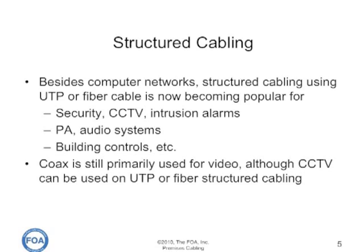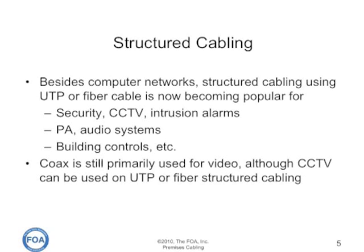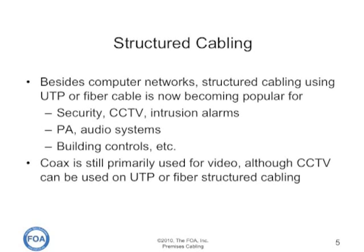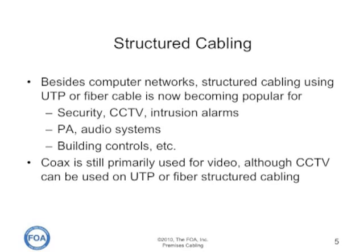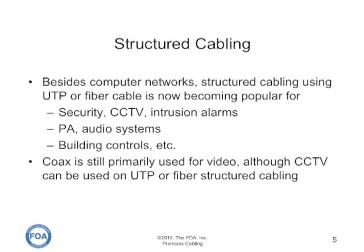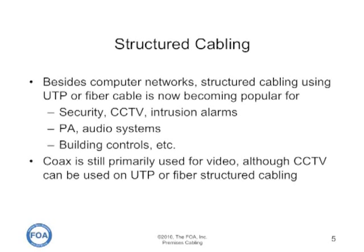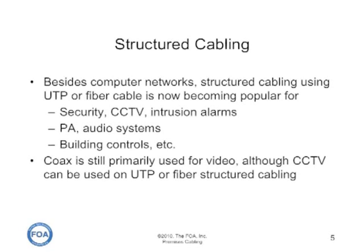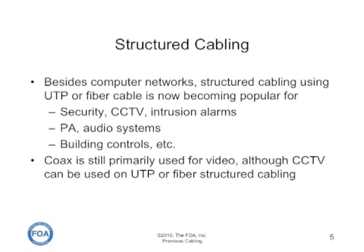The original use for structured cabling was computer networks, but now many other types of systems are designed to operate over UTP or fiber cable, including security and closed circuit television systems, intrusion alarms, public address and audio systems, building controls, and the like. While coax is still primarily used for video, IP video is used for a lot of systems over normal structured cabling.